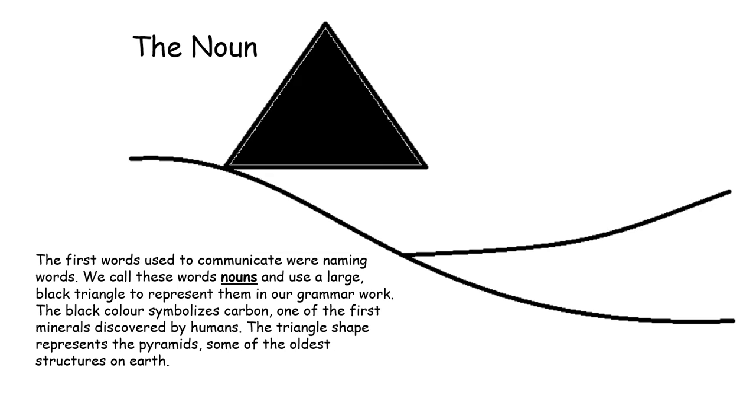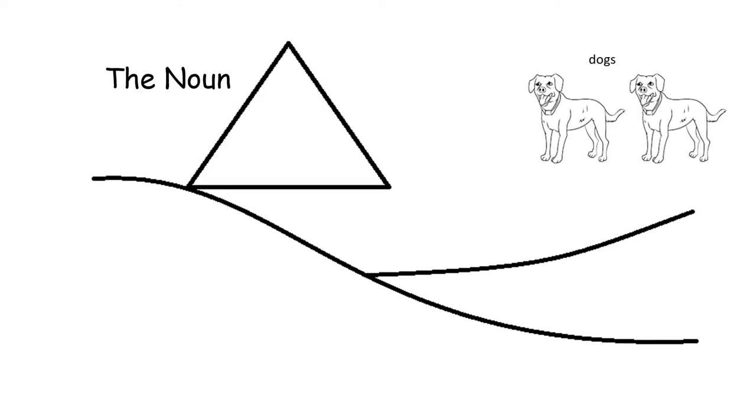The first words used to communicate were naming words. We call these words nouns and use a large black triangle to represent them in our grammar work. The black color symbolizes carbon, one of the first minerals discovered by humans. The triangle shape represents the pyramids, some of the oldest structures on Earth. The word dogs names the animals. Therefore, the word dogs is a noun.